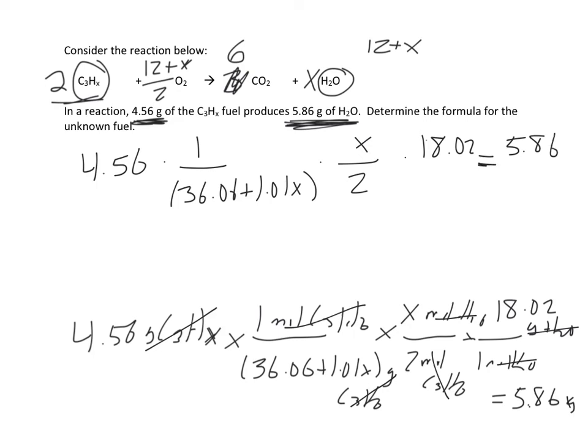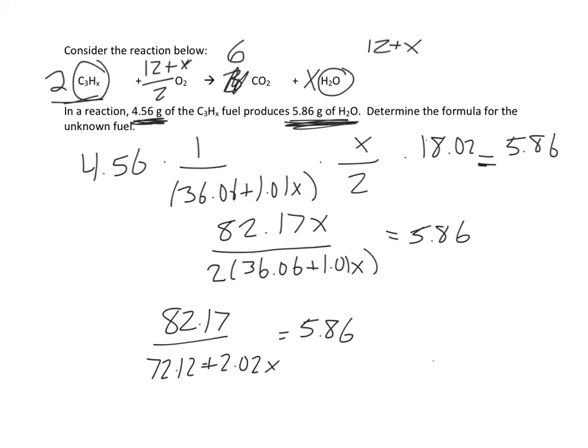Now I'm just going to start combining these. So I'm going to multiply these out and I'm going to simplify this. So just doing some simplification, I reach this. So I multiply 4.56 times 18.02 in X and I get this numerator. I get this denominator equals 5.86. So again, I still have some more simplification to do. So I can simplify it to this by distributing the 2. And now I'm going to bring the denominator over to the other side. So I'll multiply both sides by the denominator.